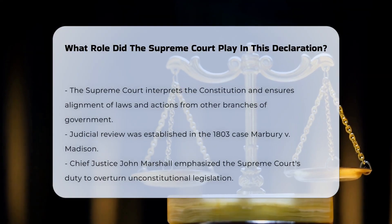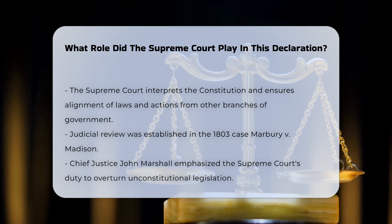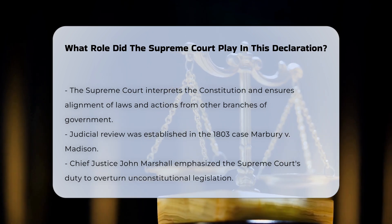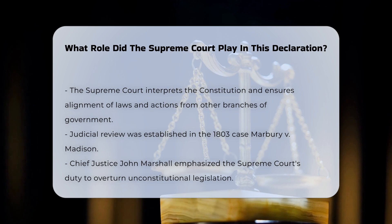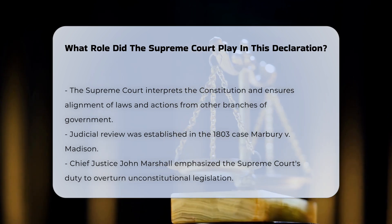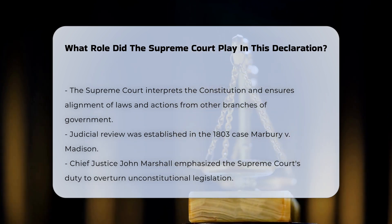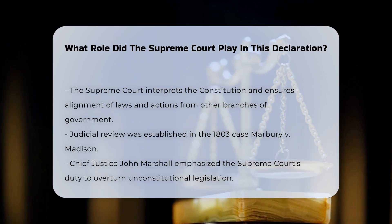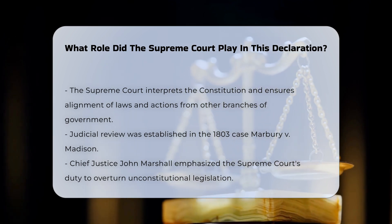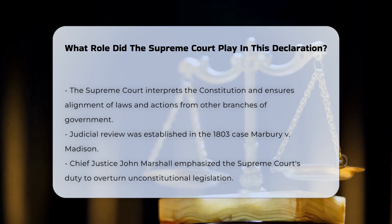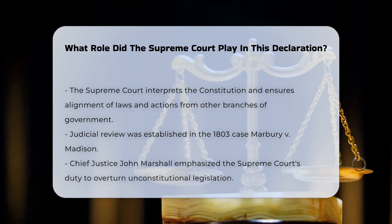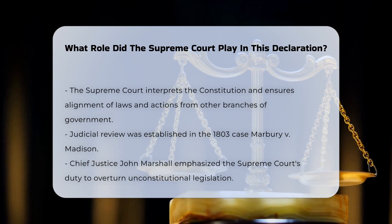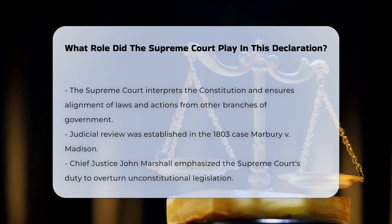The Supreme Court plays a crucial role in interpreting the Constitution and ensuring that the laws and actions of the other branches of government align with it. This role is rooted in the concept of judicial review, which was established in the landmark case of Marbury v. Madison in 1803. In this case, Chief Justice John Marshall asserted that the Supreme Court has the responsibility to overturn unconstitutional legislation, as it is the court's duty to uphold the Constitution.